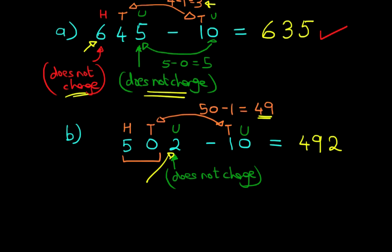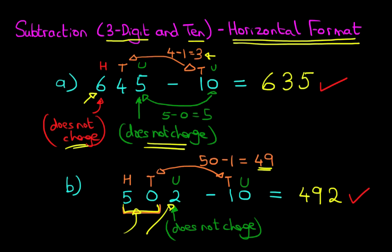So 502 minus 10 becomes 492. 502. It is these two digits which have changed. Let's scroll back up. And that is how we do subtraction of a three digit number and 10 using the horizontal format.